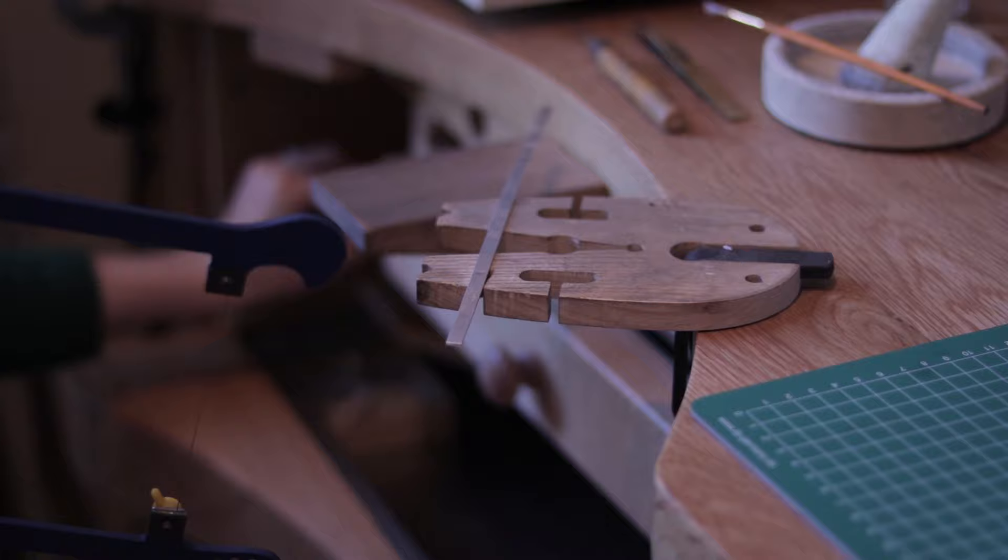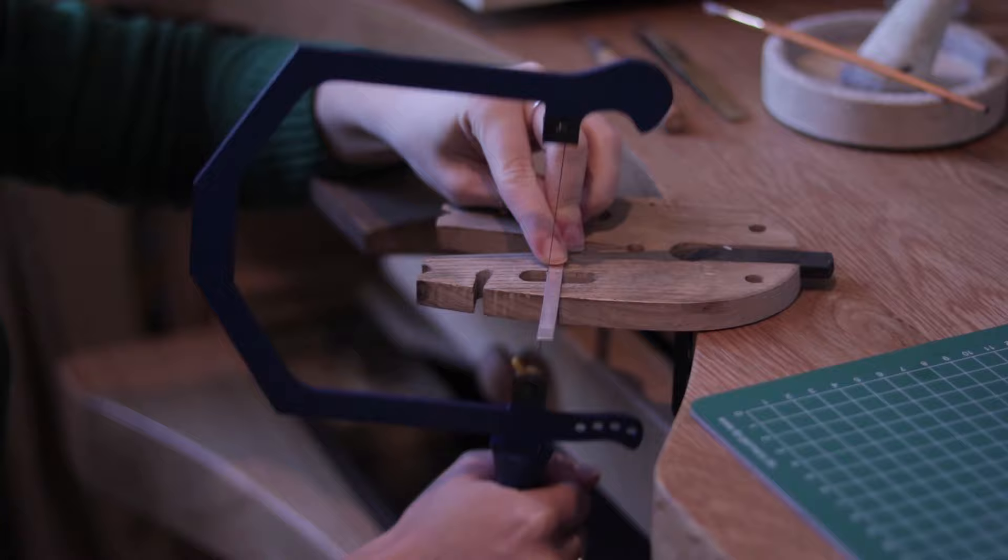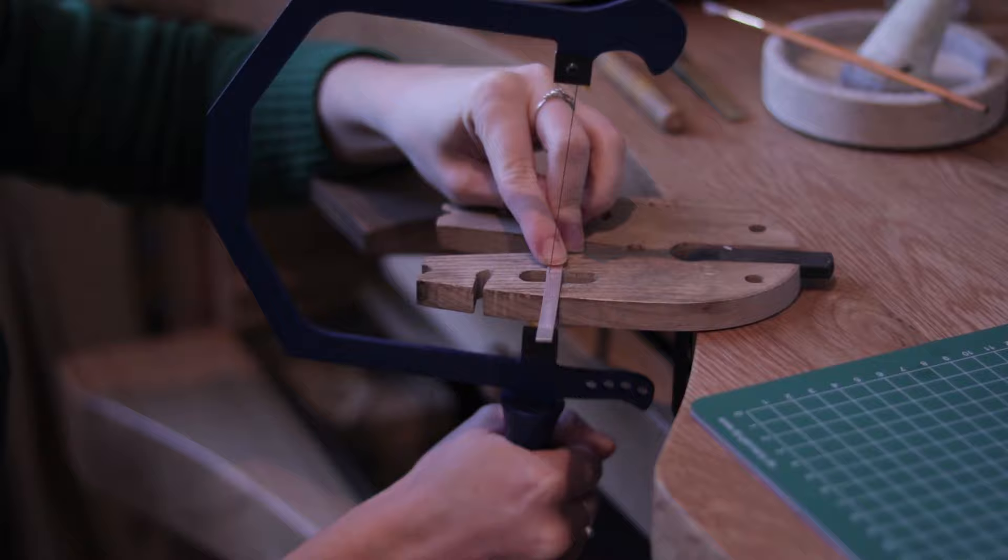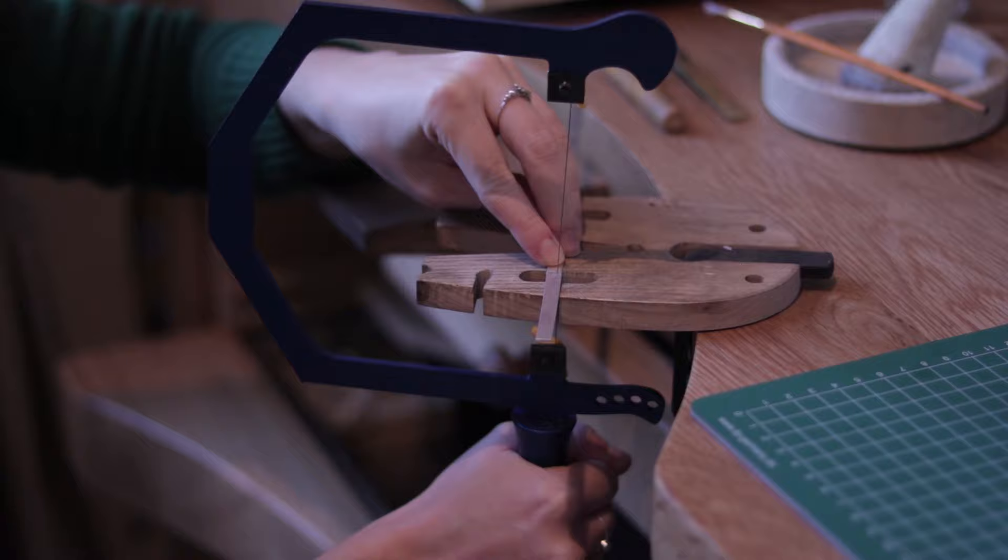I'm going to cut it with the jeweler's saw. First lubricate the blade with the beeswax and then proceed to cut the straight line. It's most comfortable when your bench peg is at the level of your chest. When cutting make sure you hold the saw frame vertically. Don't push or pull too hard and don't lean forward. Let the blade do its job.